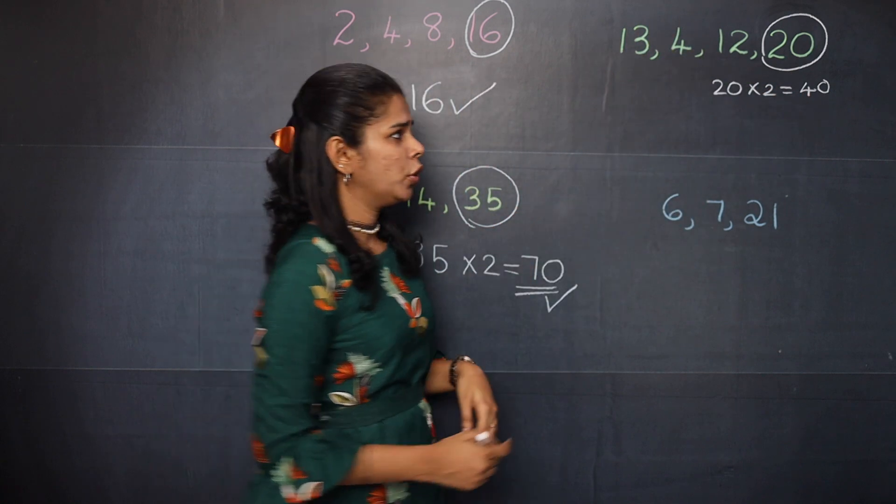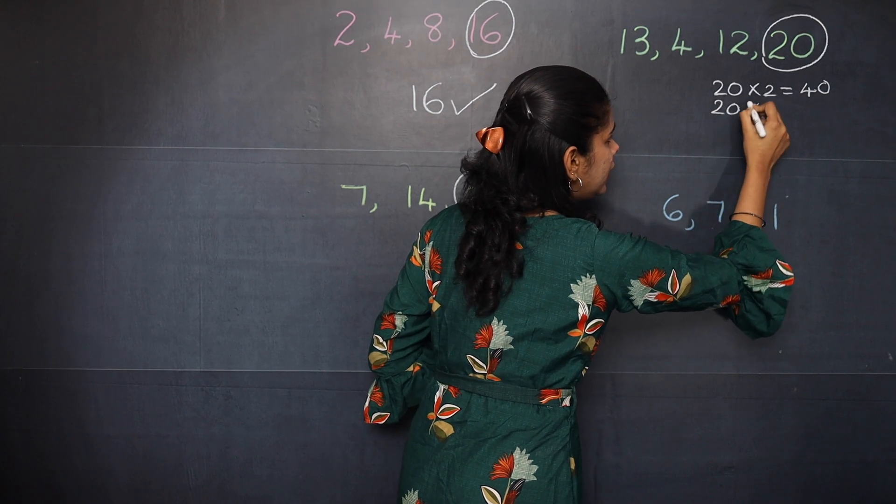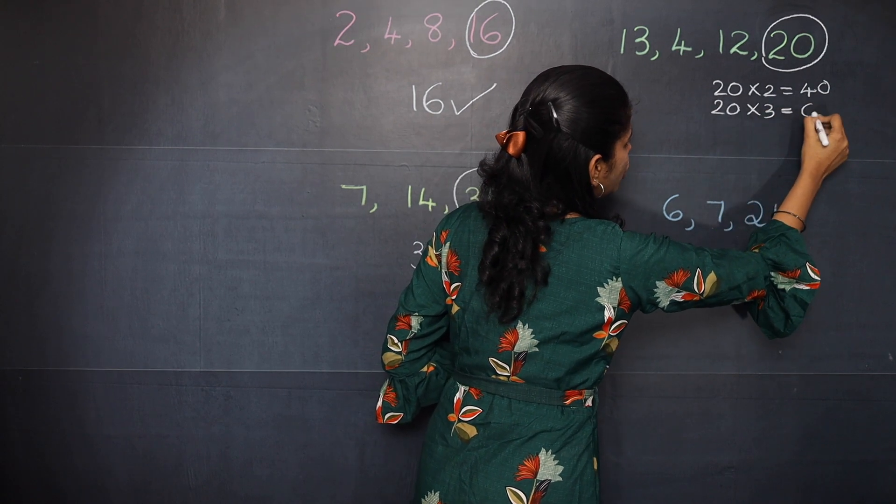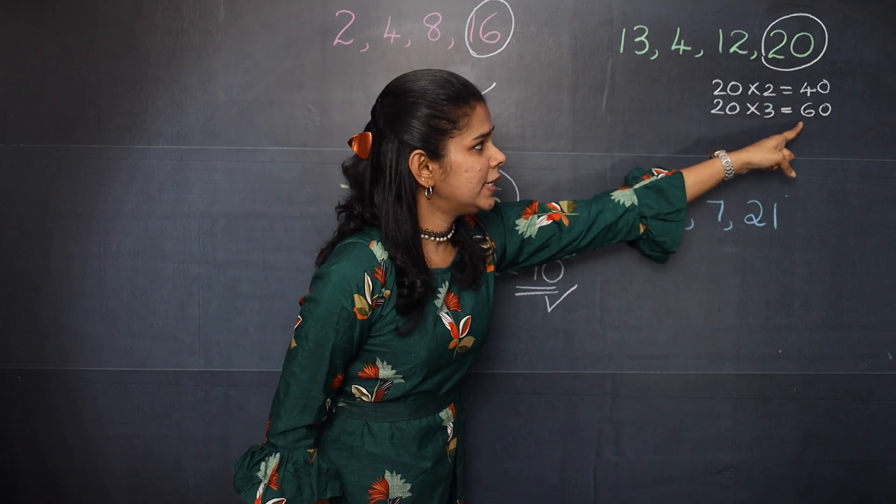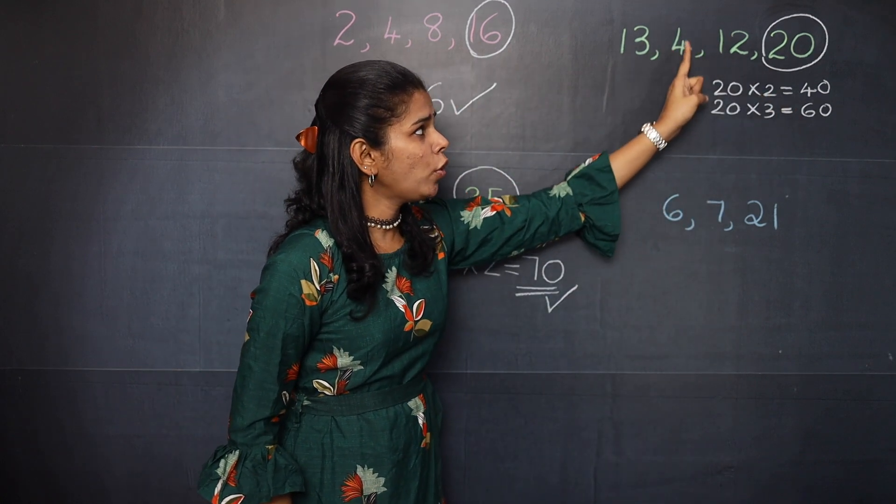So what you should do? You should multiply 20 by 3 and check. So it becomes 60. Now when you check, you can see that 60 is divisible by 4 and 12.